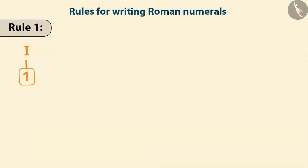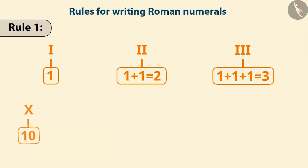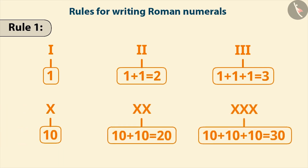The number of times a symbol is repeated, its value is added as many times. Similarly, repeating the tenth digit gives 20 and 30 respectively.